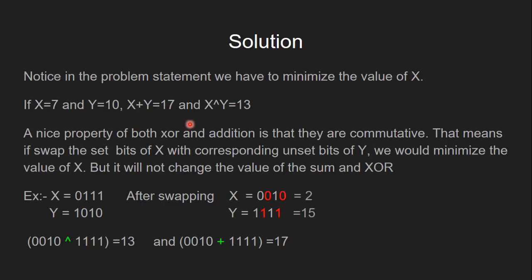A very nice property of both XOR and addition is that they are commutative. That means if we swap the set bits of X with corresponding unset bits of Y, we would minimize the value of X but it will not change the value of the sum and XOR.